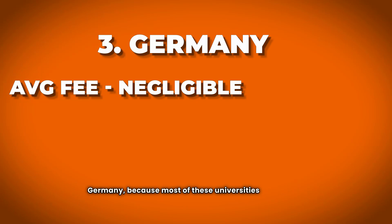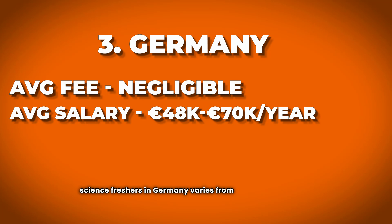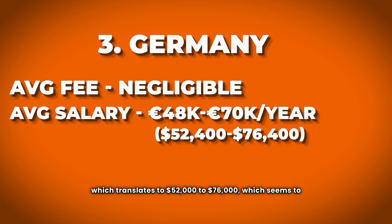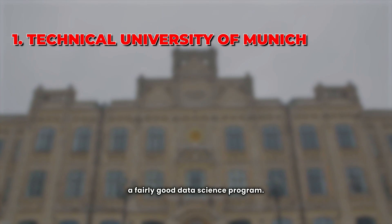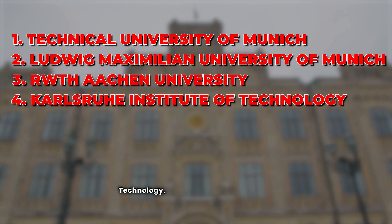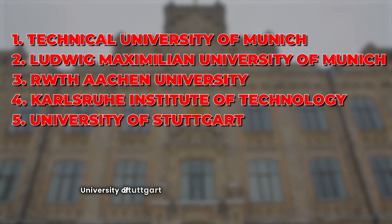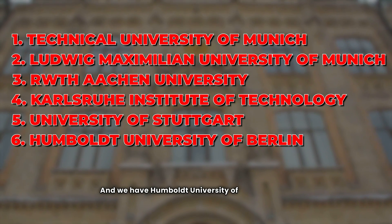Since a lot of you are also interested in Germany: you can expect to do a master's in data science with a negligible fee, as most universities charge only an administrative fee of around €150 to €600 per semester. Salaries for data science freshers in Germany range from €48,000 to €70,000, which translates to $52,000 to $76,000 — better than UK salaries. Key universities include TU Munich, Ludwig Maximilian University of Munich, RWTH Aachen, Karlsruhe Institute of Technology, University of Stuttgart, and Humboldt University of Berlin.